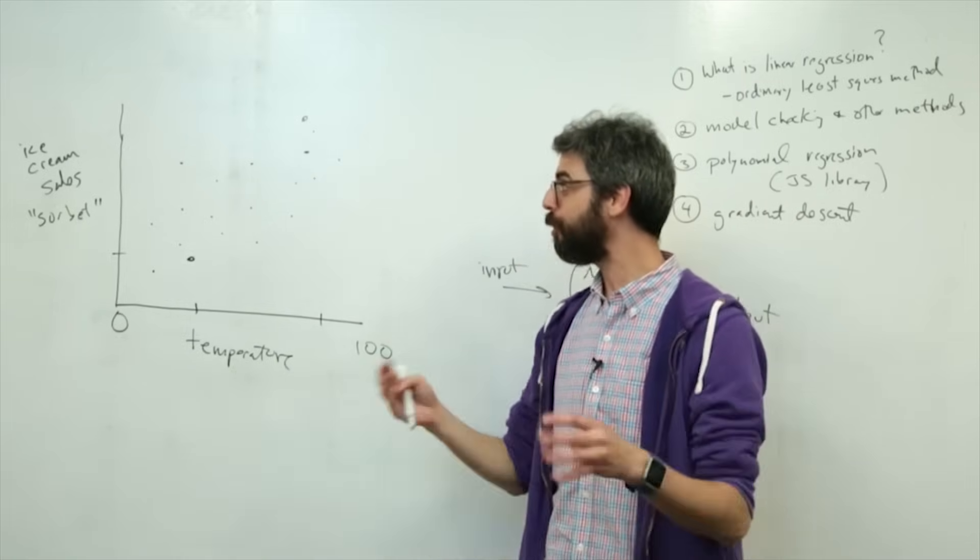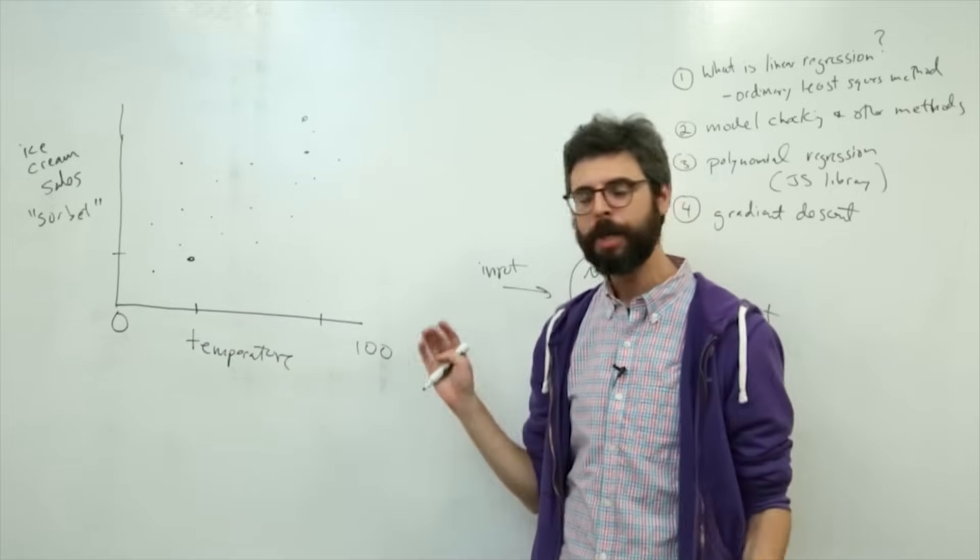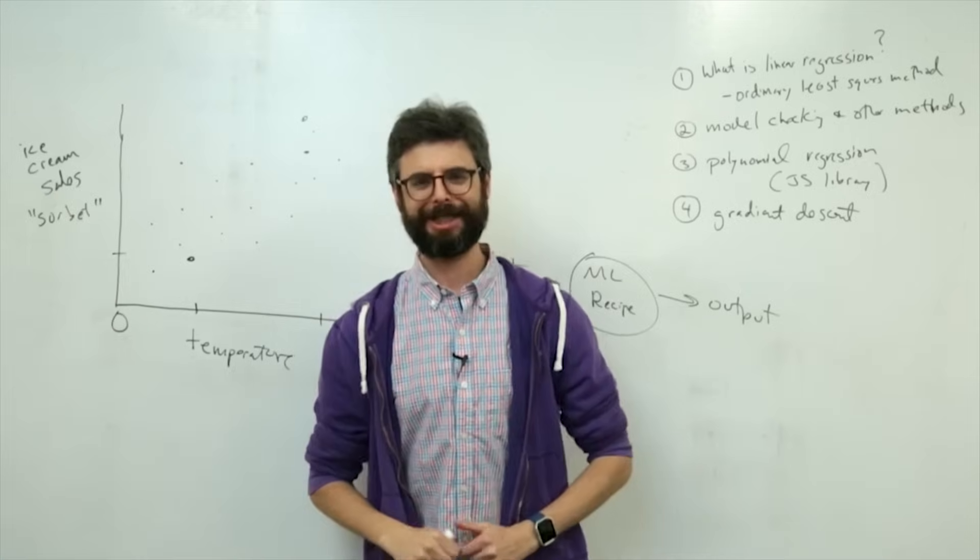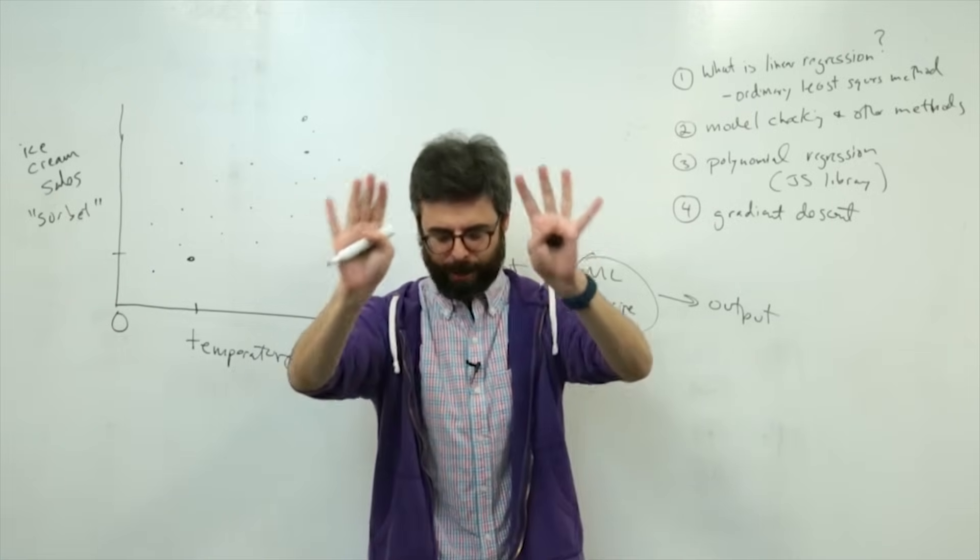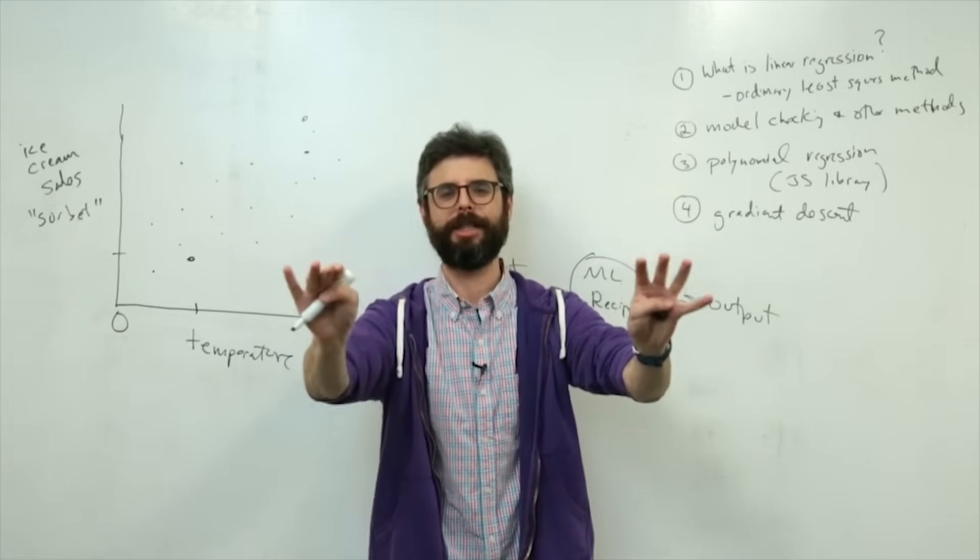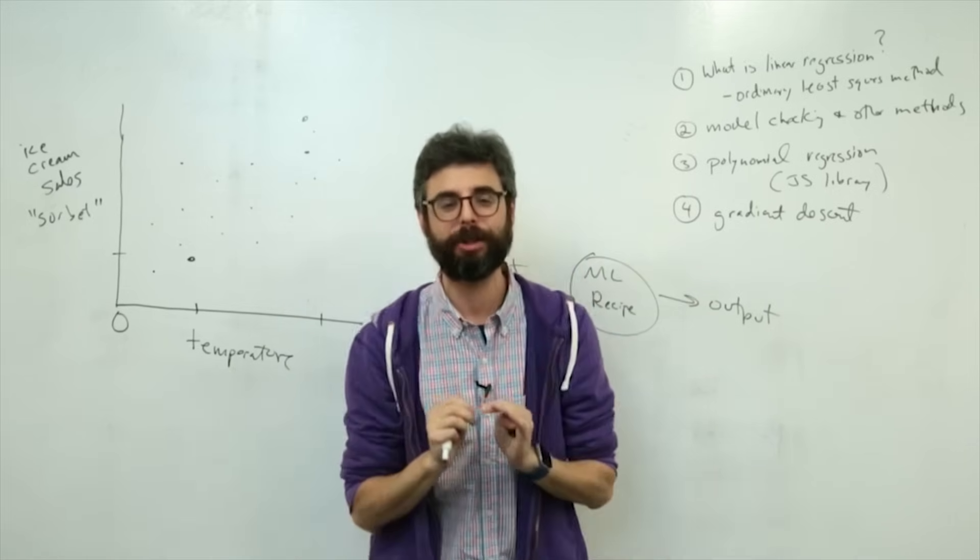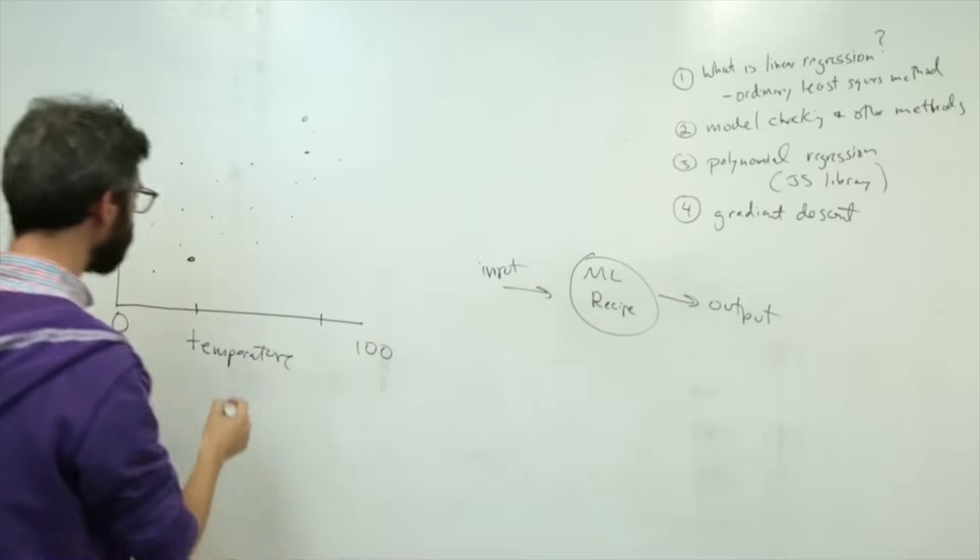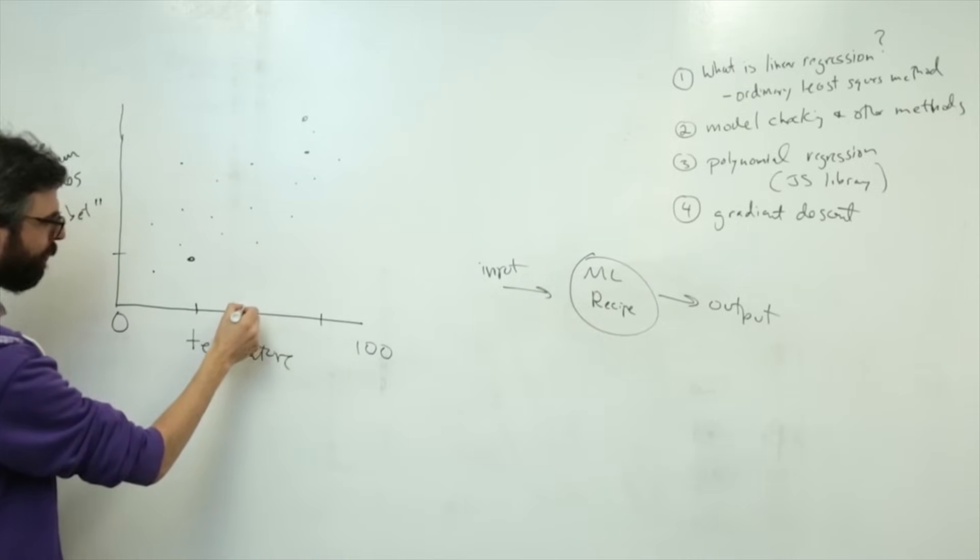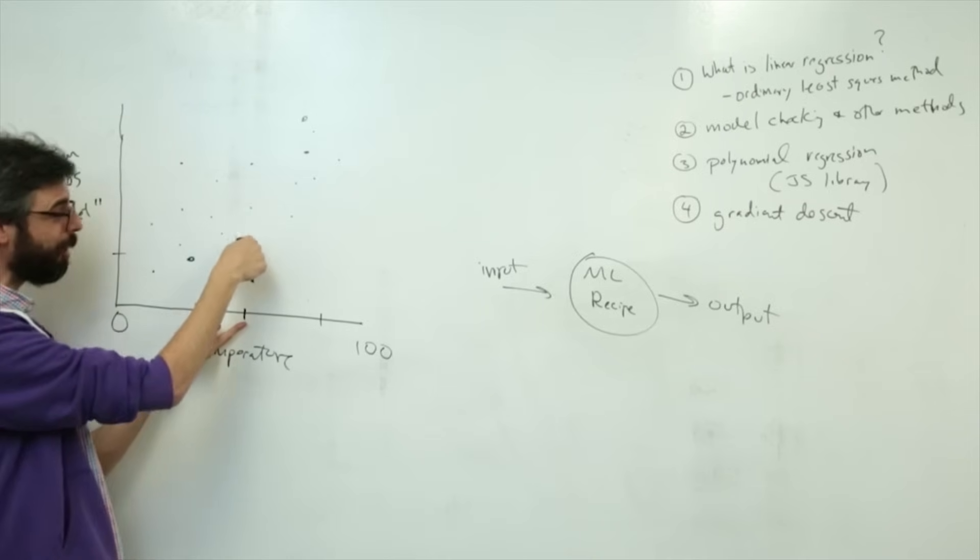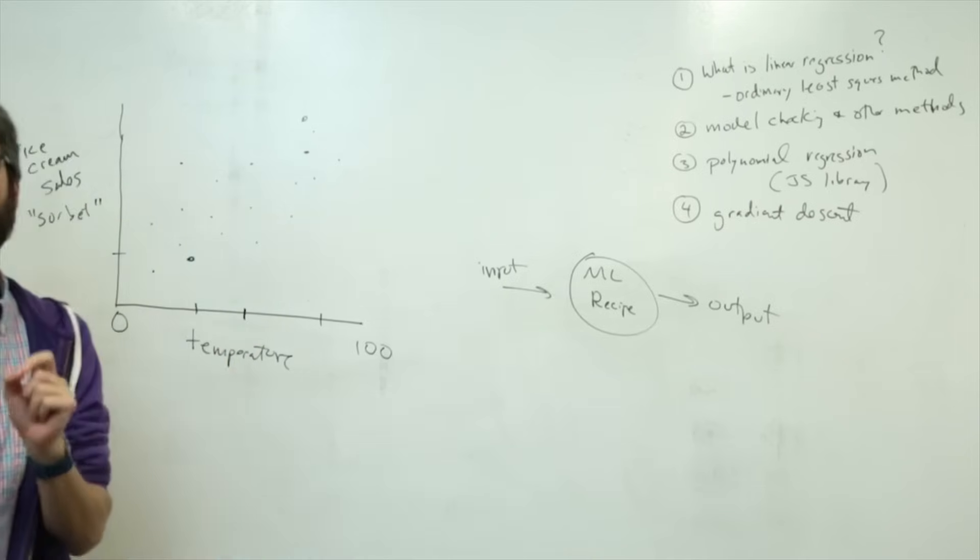And then what you could do is you have all this data. Now somebody comes into your place of business and says, tomorrow the weather's going to be 50 degrees. Could you make a guess as to how many ice creams you're going to sell? We could look here at 50 degrees. Well, there was some other day where I sold this much, where it's 50, some other day. How could we make a prediction?